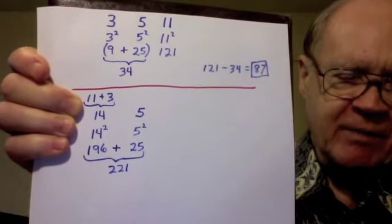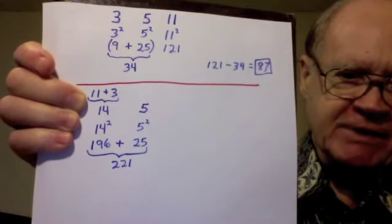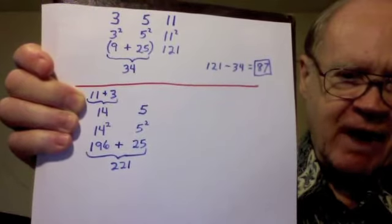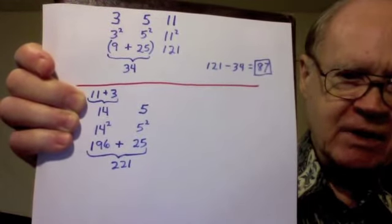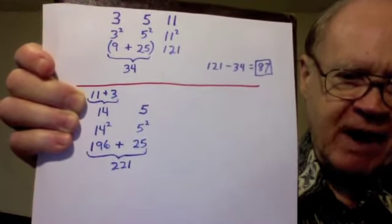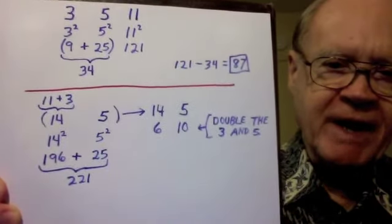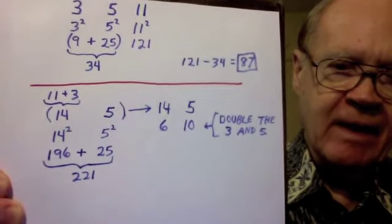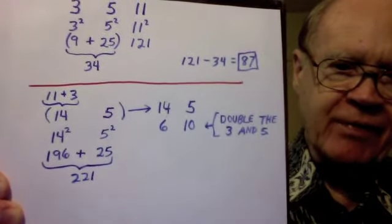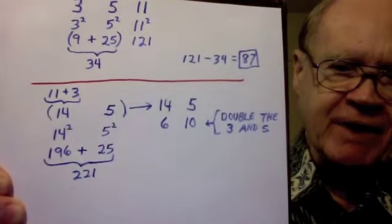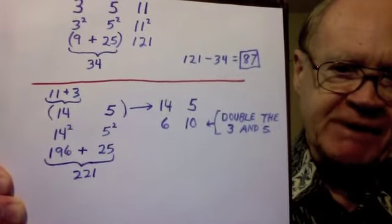I square each of them. 14 squared is 196. 5 squared is 25. I add those. 196 plus 25 is 221. Then I take the 14 and 5 again, and now I take the 3 and the 5, and I double each of them, making 6 and 10.